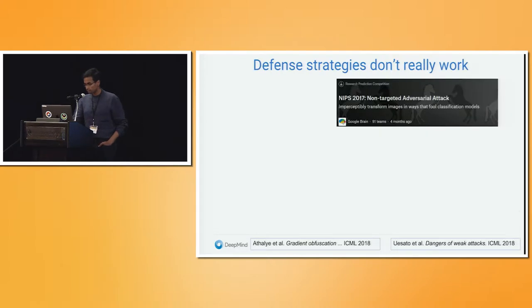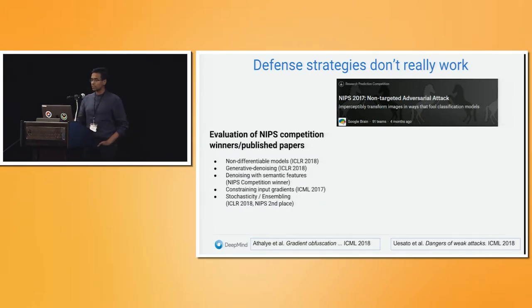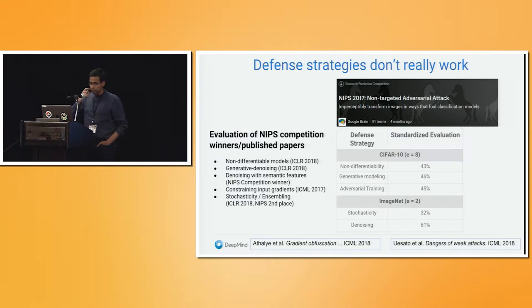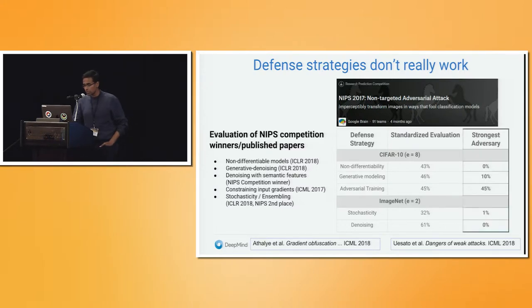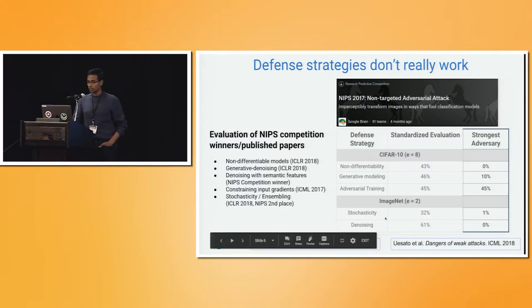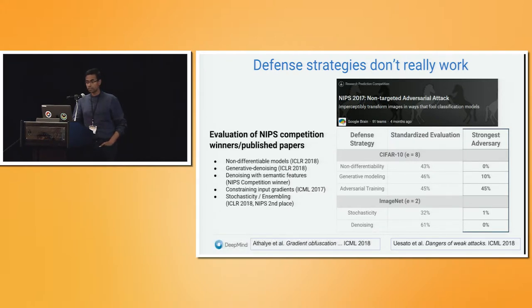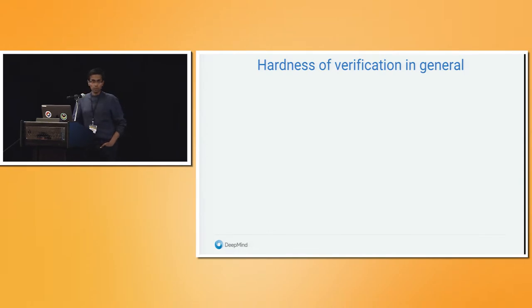This underscores the need for verification — provable guarantees that no matter what attack algorithm is used, your network would not be vulnerable. This played out in a competition organized at NIPS last year, where various new defenses and attacks on image classifiers were evaluated. Proposals seemed to significantly enhance performance under adversarial attacks during the competition, but with a better adversary, accuracies could be pushed way down — some all the way to zero, including one that won second place.